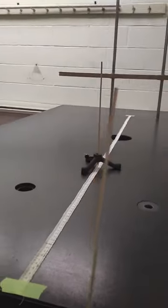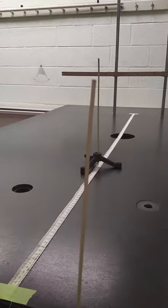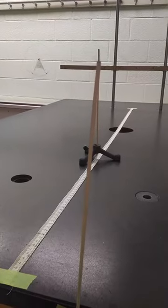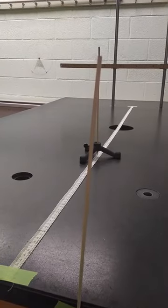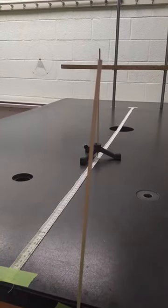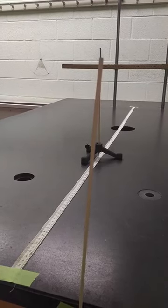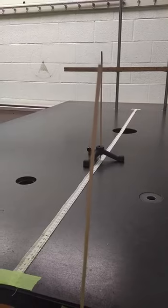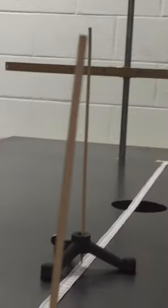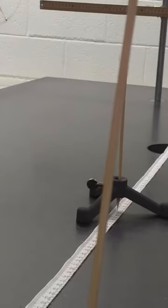But what the students do is they get down here on the level and they move their eye back and forth, closing one eye, until the stick that's right in front of them and the stick that's further down the table are exactly on top of each other. And then they zoom in on that meter stick behind it and figure out what's its position back there.